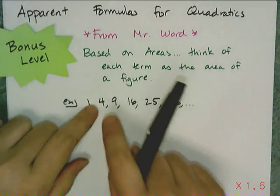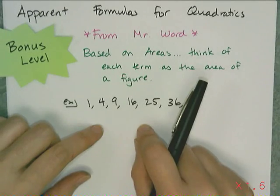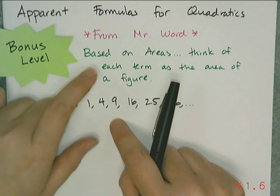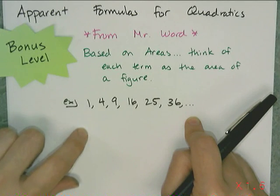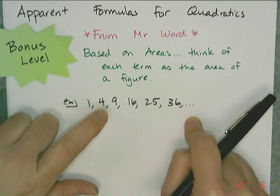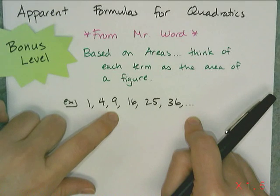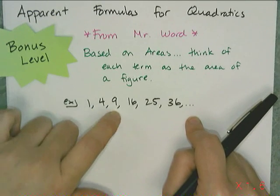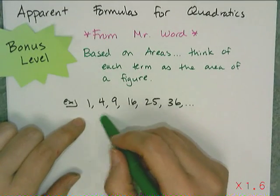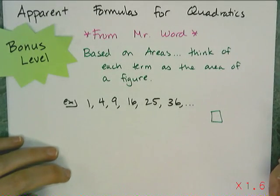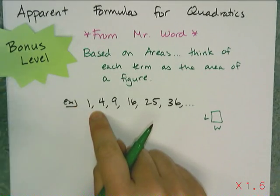If you recognize these numbers as what they are — we call them squares — it gives you a clue as to how we're going to use this whole area thing. These are the perfect squares, meaning that if I take the number 1 as the length of a square, its area is 1. If I take 2 as the side length, its area is 4. Side length 3 has area 9. And so I take these numbers and think of them as areas, and I want to find the length and the width of the square.